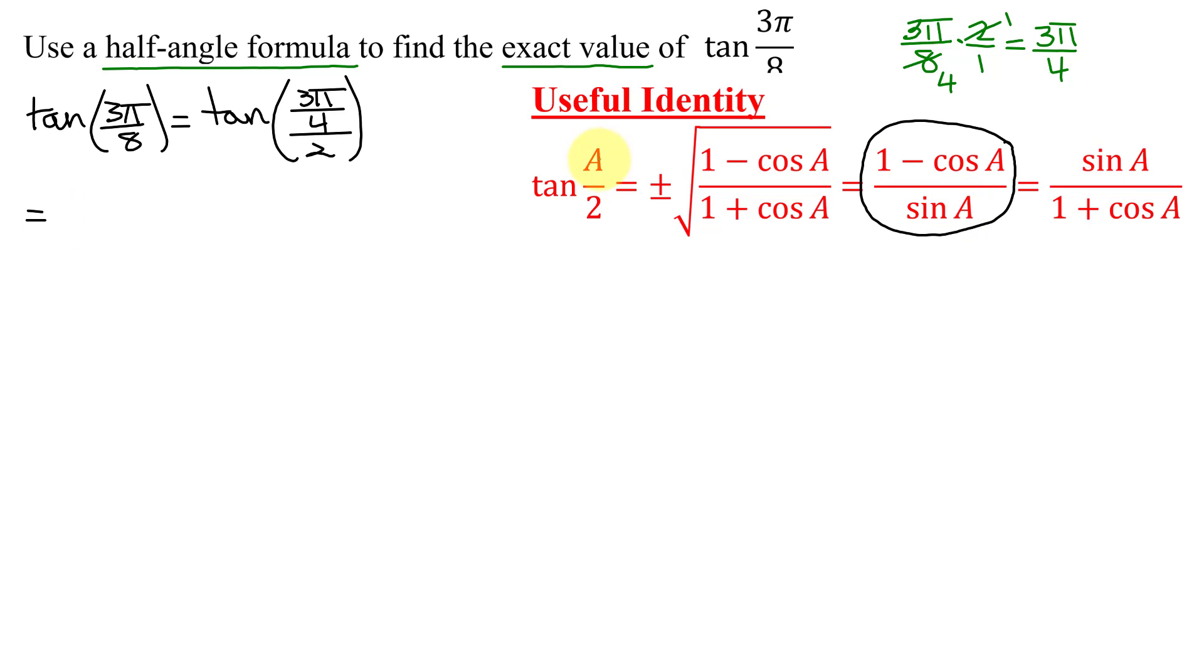So remember in my case a is 3π over 4. So I'm going to get 1 minus the cosine of a, so that's the cosine of 3π over 4, divided by the sine of a. And remember a is 3π over 4.